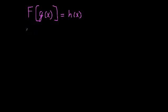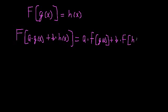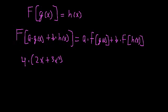There is an important class of operators called linear operators. Linear operators share one very important property: if you have the input a times g of x plus b times h of x — where g and h are arbitrary functions and a and b are constants — then this equals a times F acting on g of x plus b times F acting on h of x. To make this more concrete, let's look at 2x plus 3x squared and verify that multiplying by a constant is a linear operator.